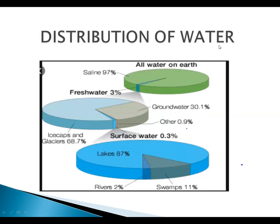Looking at the distribution of water: all water on earth consists of two main kinds — saline, meaning salt water, and fresh water. From the fresh water, we have ice caps and glaciers in solid frozen form, groundwater and other liquid forms of water, and then surface waters including lakes, rivers and swamps.